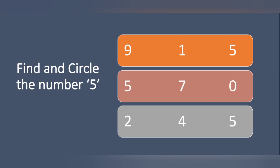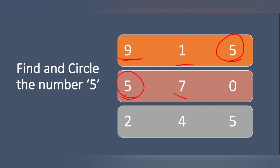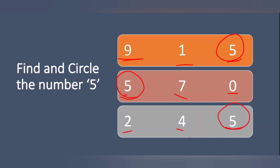Find and circle the number 5. This is not number 5 — this is number 1. What is this? Number 5 — circle it. This one? No, it's not 5, it's 0. The next one? 2. This one? 4. Then this one? Number 5 — circle it. You are getting it right? Very good.